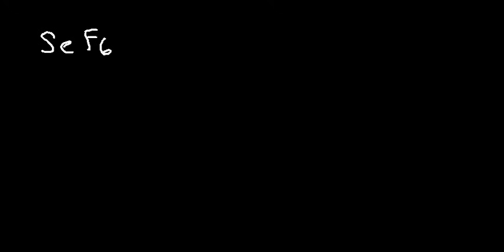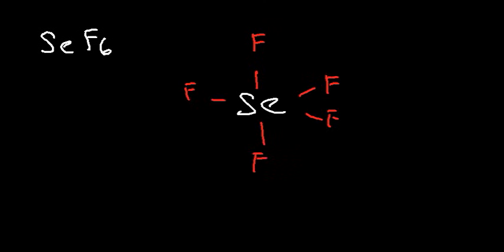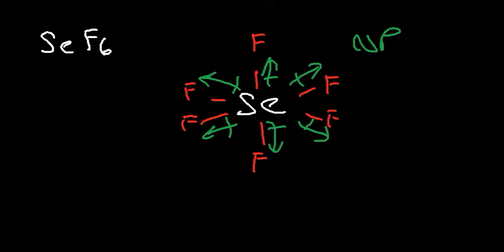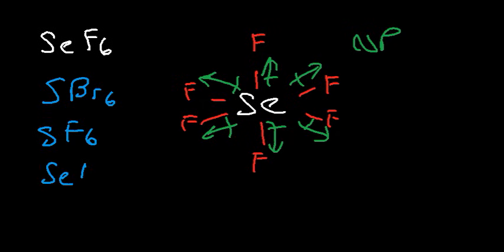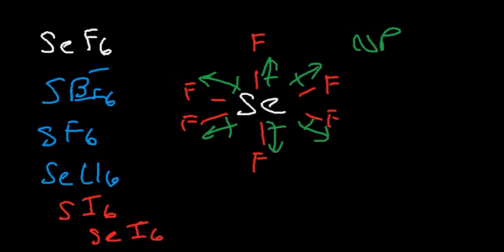The octahedral molecular geometry, like SeF6, is also nonpolar. All outer elements are identical and all dipole moments cancel. Other molecules in this category — SBr6, SF6, SeCl6, SI6, SeI6 — sulfur and selenium are in the same column of the periodic table and share the same octahedral shape, making them all nonpolar.